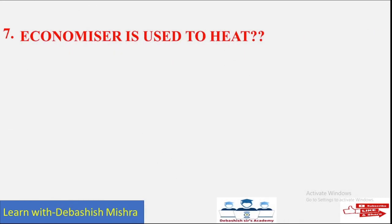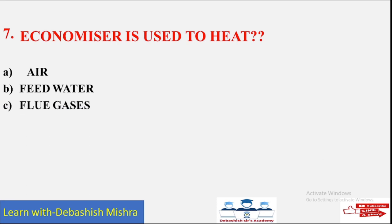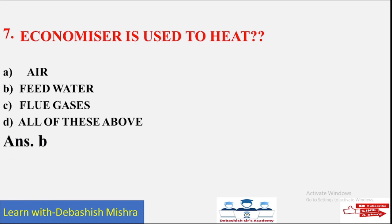Question number seven: Economizer is used to heat — this is a very, very important question. The question may also be asked as: What is the function of economizer? Options are: A) Air; B) Feed water; C) Fuel gases; D) All of these. The economizer is used to heat the feed water. Remember this point.